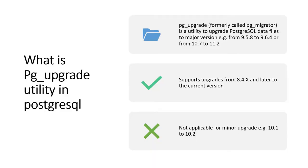So first let's understand what pg_upgrade is. pg_upgrade is also known as pg_migrator in earlier versions of PostgreSQL. It is a utility used to upgrade a PostgreSQL instance from a lower version to a higher version. For example, if you need to upgrade from version 10 to 12, you can use pg_upgrade.